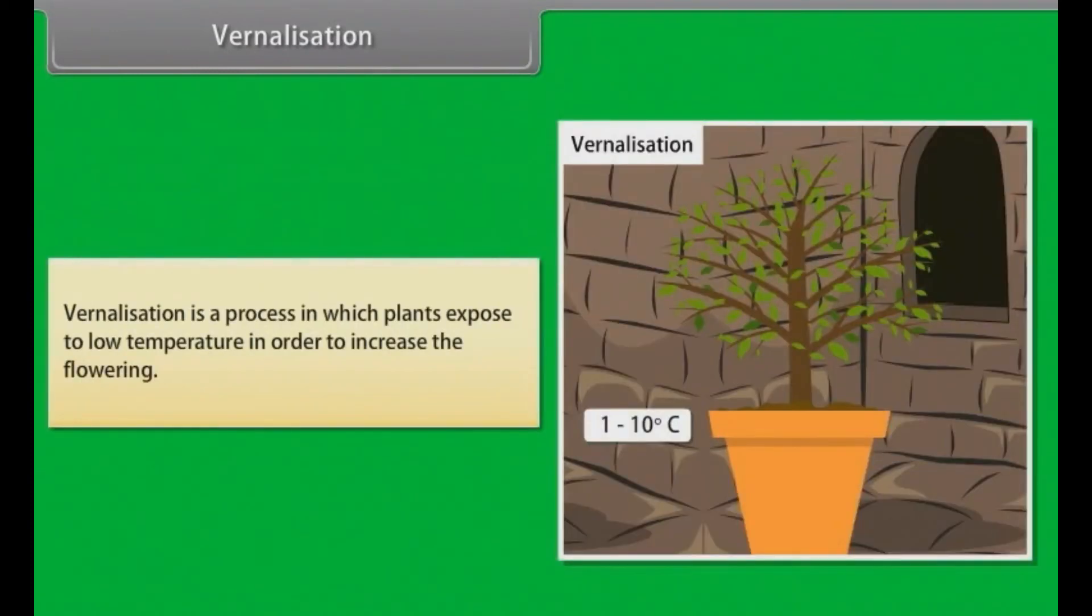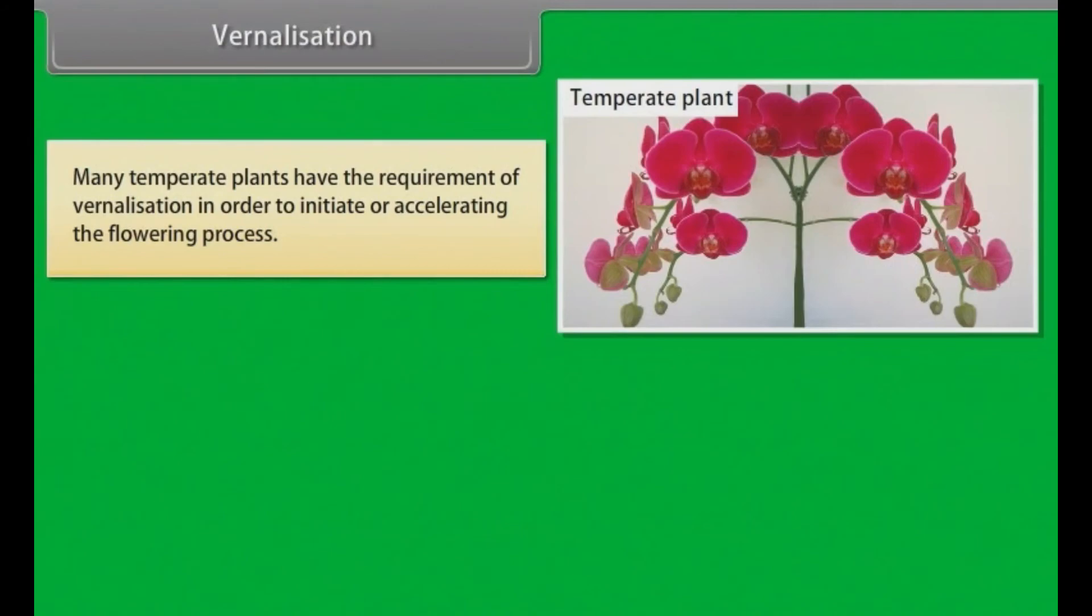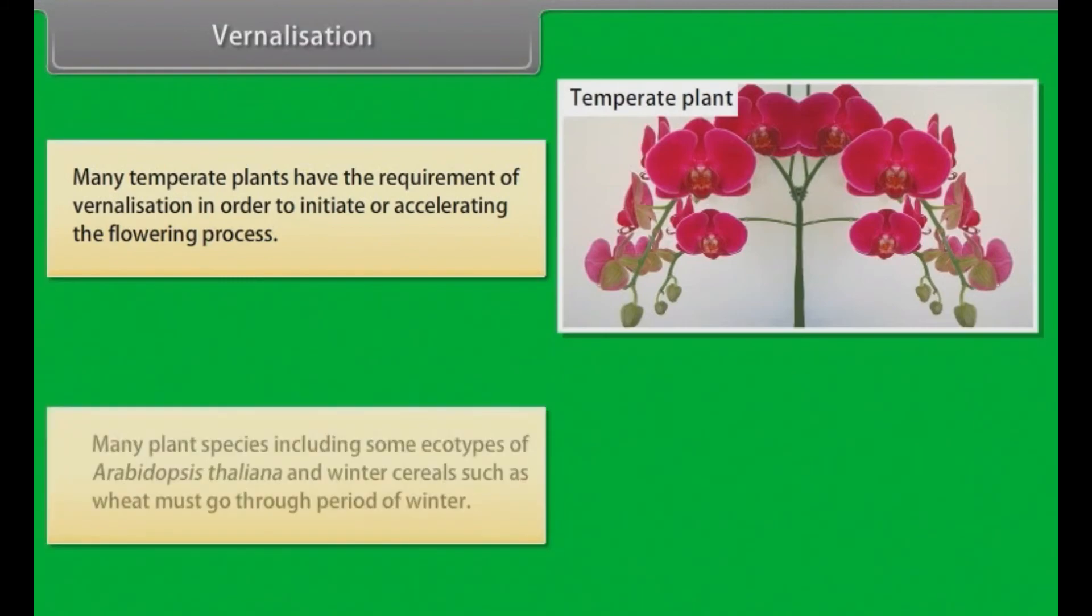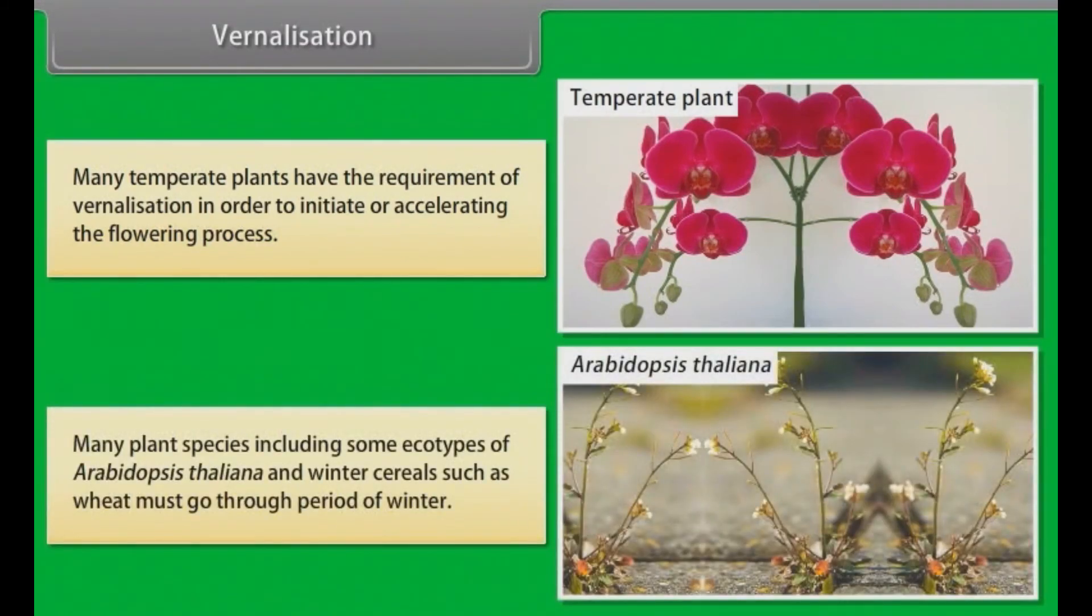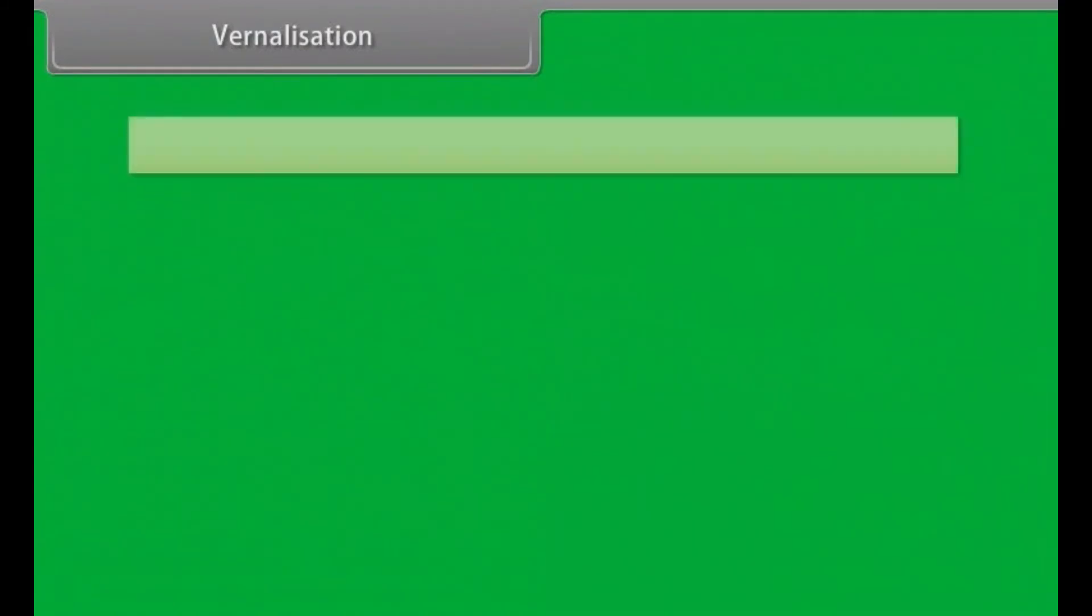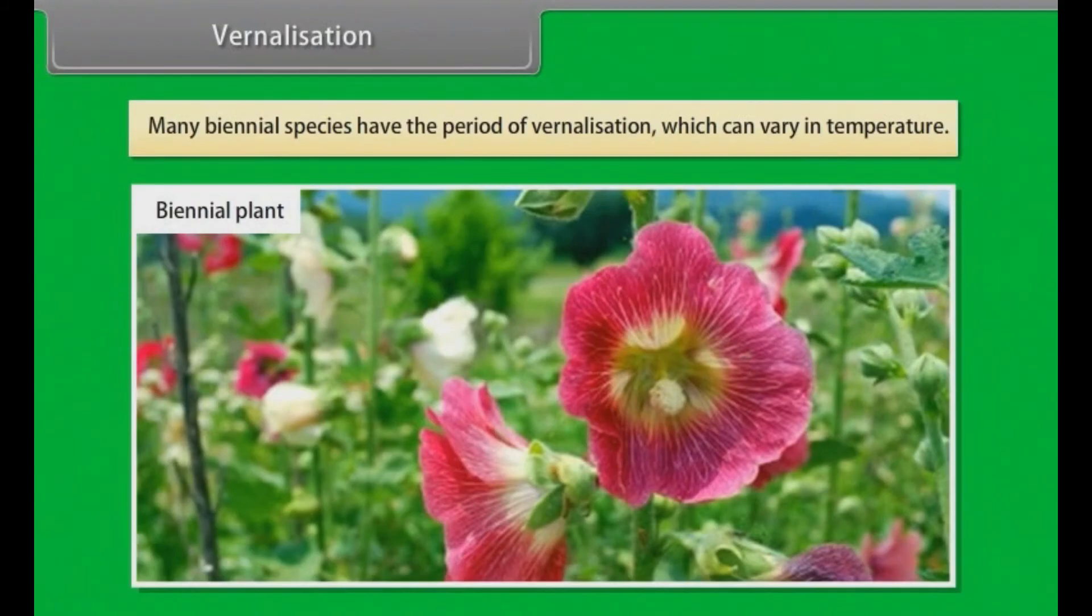Vernalization. Vernalization is a process in which plants are exposed to low temperature in order to increase the flowering. Many temperate plants have the requirement of vernalization in order to initiate or accelerate the flowering process. Many plant species include some ecotypes of Arabidopsis thaliana and winter cereals such as wheat must go through period of winter. Many biennial species have the period of vernalization which can vary in temperature.